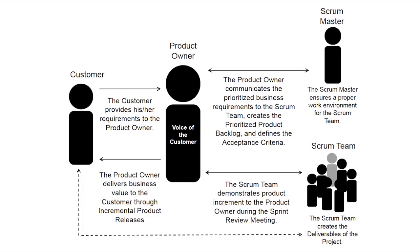To help you understand how the Scrum organizational structure works, we have a diagram here. The roles played by the Scrum master, product owner, and Scrum team, the interrelation of these roles, and the way in which each one contributes to fulfilling customer requirements, are summarized here. The organization aspect of Scrum also addresses the team structure requirements to implement Scrum in programs and portfolios.